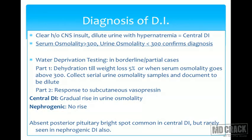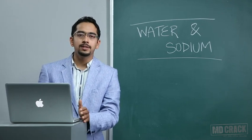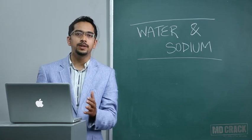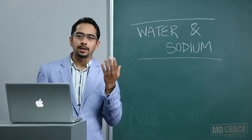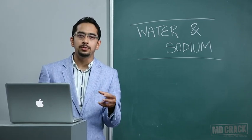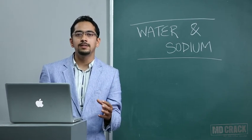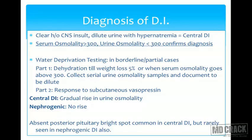We have a test for diagnosis called water deprivation test. It's done in two parts: first we deprive water and see the body's response. Normally after water deprivation, ADH should get activated and secreted, act on kidneys, and urine output should reduce while urine becomes concentrated to maintain normal blood osmolality. We achieve dehydration up to 5% weight loss or measure serial serum osmolality. The endpoint is when serum osmolality goes above 300. In diabetes insipidus, urine is dilute even when serum osmolality is above 300.